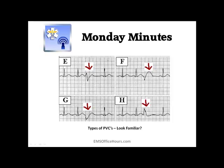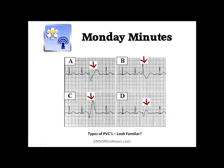Maybe you've seen something like this on a rhythm strip and it happens once, and you read it off as artifact or the patient moving around. But keep an eye out — if you see one and then another similar complex, it could quite possibly be PVCs, not artifact. It might lead you to think something else is going on with that patient. So don't write them off as an EKG abnormality due to artifact or patient movement. They're not always gigantic wide complexes — they'll be abnormal, a little wider, but not necessarily like examples A or C.